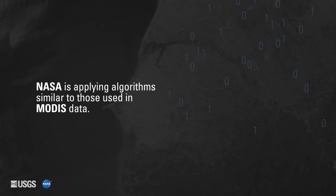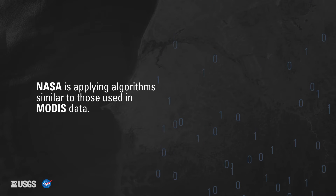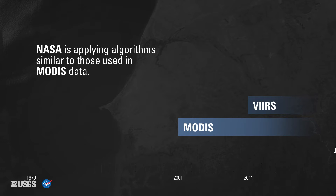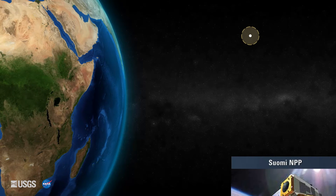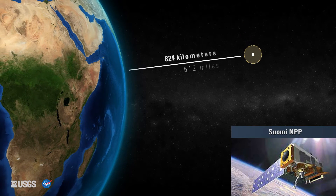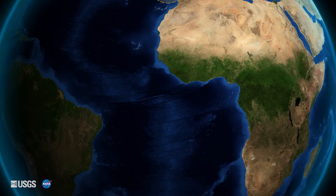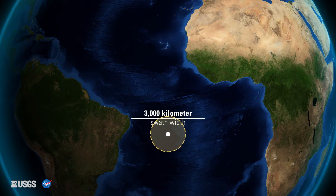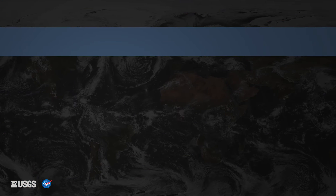NASA is applying algorithms similar to those used in Moderate Resolution Imaging Spectroradiometer data to the NASA VIIRS data. NASA VIIRS data are considered a continuation of the MODIS data, just as MODIS data are a continuation of Advanced Very High Resolution Radiometer data. NASA VIIRS observes the entire Earth's surface twice each day from a polar orbit at 824 kilometers, or 512 miles, above the Earth's surface. The 3,000 kilometer swath width of the VIIRS instrument, which is 710 kilometers greater than that of MODIS, allows for no gaps in coverage similar to those observed in MODIS near the equator.